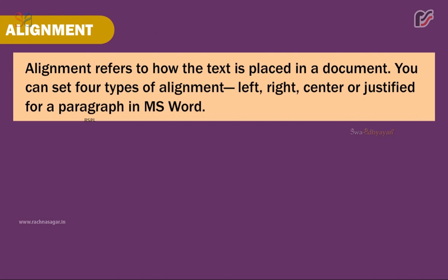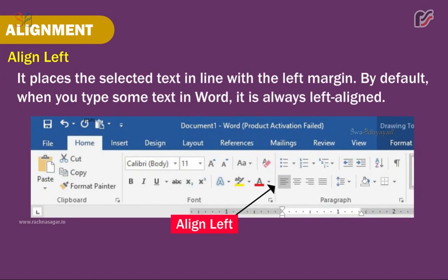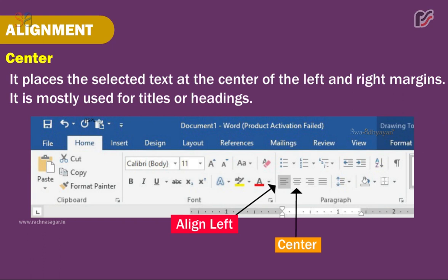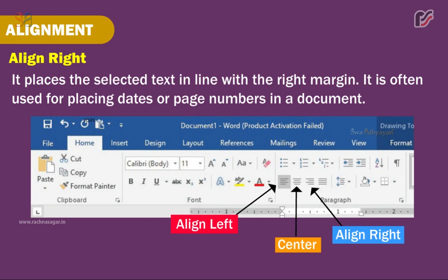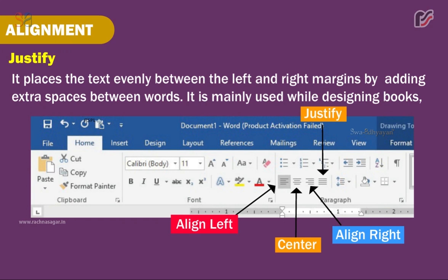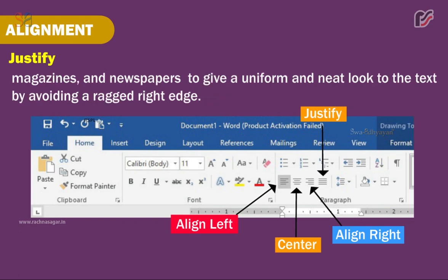Alignment refers to how the text is placed in a document. You can set four types of alignment for a paragraph in MS Word: Left, Right, Center, or Justified. Align Left places the selected text in line with the left margin — by default, text in Word is always left-aligned. Center places the selected text at the center of the left and right margins, and is mostly used for titles or headings. Align Right places the selected text in line with the right margin, often used for dates or page numbers. Justify places the text evenly between the left and right margins by adding extra spaces between words, and is mainly used for books, magazines, and newspapers to give a uniform, neat look by avoiding a ragged right edge.